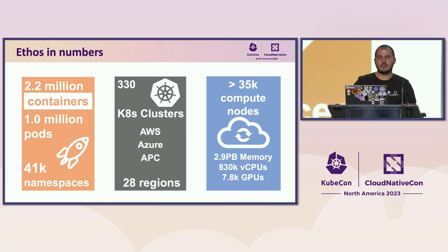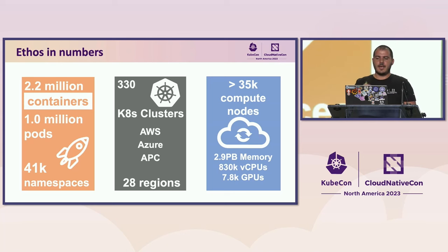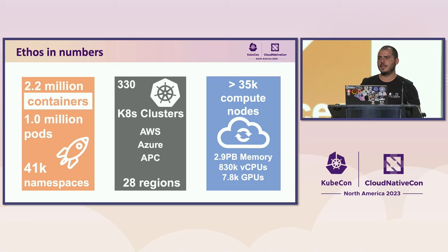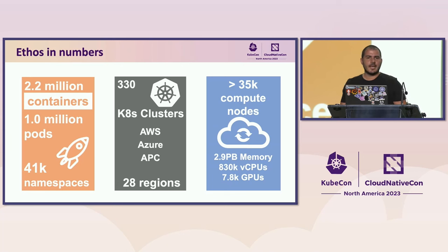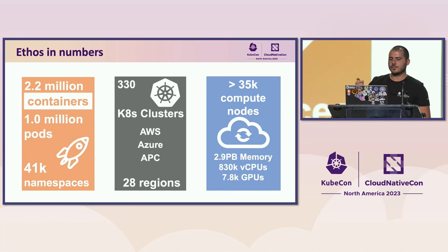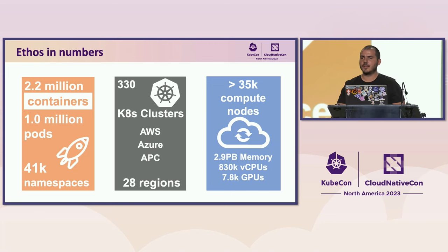To better understand the platform scalability, let's talk about some pretty impressive numbers, which are growing every month. Ethos holds more than two million containers encapsulated in one million pods. These pods are running in 41,000 tenant namespaces, owned by application development teams. We are managing more than 300 clusters deployed across 28 different cloud regions in AWS, Azure, and Adobe Private Cloud. These workloads use around 35,000 compute nodes, consuming approximately 2.9 petabytes of RAM memory and 800,000 virtual CPUs. AI applications utilize almost 8,000 GPUs.